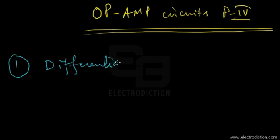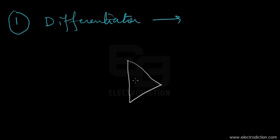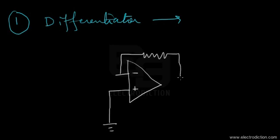The differentiator circuit is basically a circuit created using the op-amp in which the circuit differentiates the input voltage with respect to time. Here we have the negative and positive inputs of the op-amp. The non-inverting input — the positive input — is being grounded, and we have a feedback path consisting of a resistance.